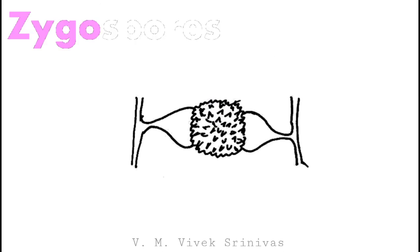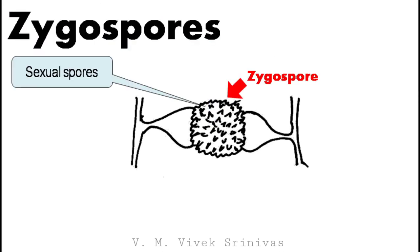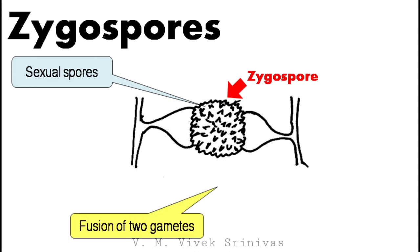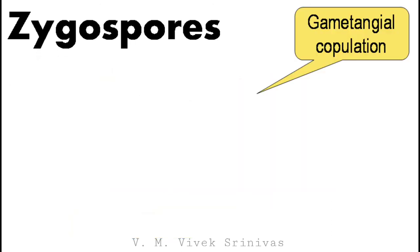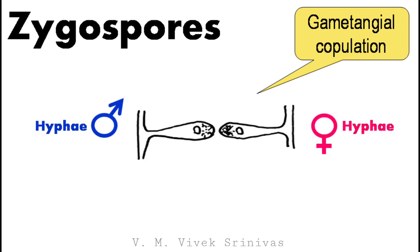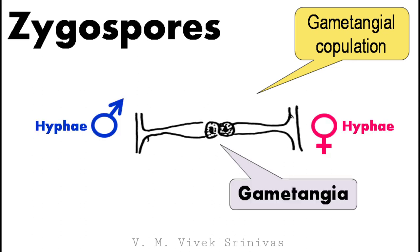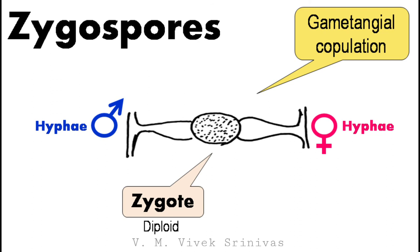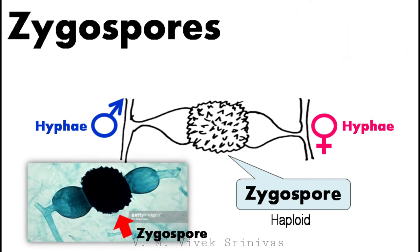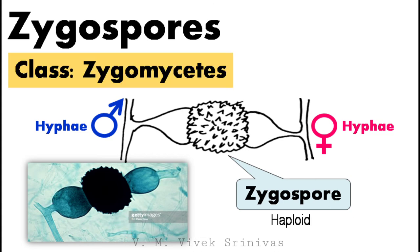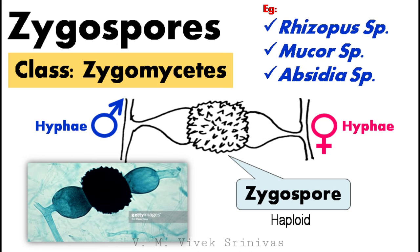First we will see about zygospores. This is a sexual spore where the spores are produced by fusion of two gametes — that is, fusion of male and female gametes. At first, gametangial copulation starts with the extension of two gametes. Later, the gametangia fuse and form a diploid zygote, which in turn undergoes meiosis to form a haploid zygospore. Zygomycetes is the class of fungi which produces this type of sexual spore. Rhizopus, Mucor, and Absidia are examples.